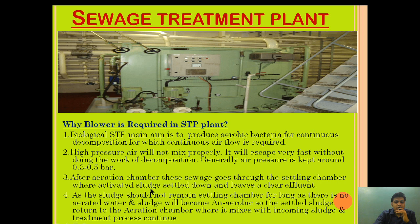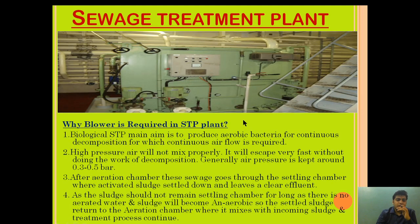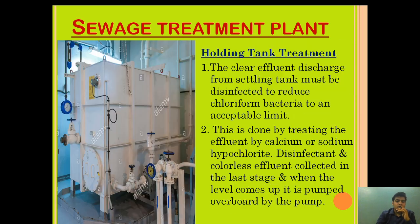After the aeration chamber, the sewage goes to the settling chamber, where the activated sludge settles down and leaves a clear effluent. The clear effluent passes to the disinfectant tank. The activated sludge must not remain settled in the settling chamber for too long, as there is no aerated water there and the sludge would become anaerobic. Therefore, the settled sludge is returned to the aeration chamber, where it mixes with incoming sewage and the treatment process continues.